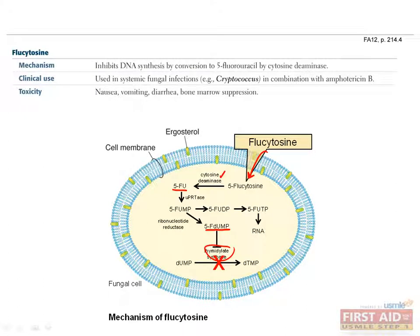Like other chemotherapeutic agents, toxic side effects of flucytosine include nausea, vomiting, diarrhea, and bone marrow suppression.